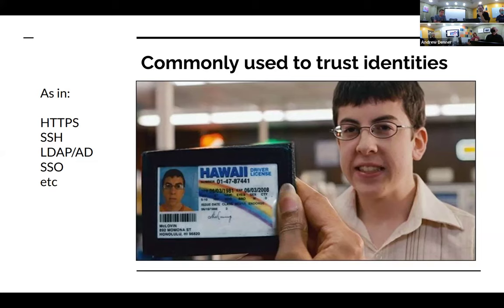You can try faking an identity — like Nick Levin here is trying to fake his identity, and the trusted third party he's trying to use is the state of Hawaii. SSL is used with a lot of stuff like LDAP and Active Directory. I'll throw out examples if you guys know stuff I should add. It's used a lot.